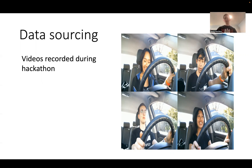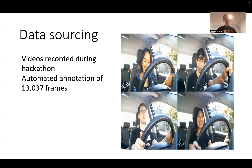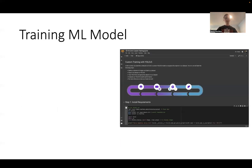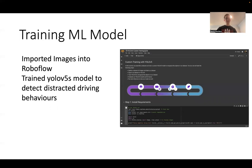We recorded these videos during the hackathon and annotated about 13,000 frames, which we also automated to speed up the process. We split into training, test, and validation sets to ensure good training results, and finally trained the model using Google Colab because of its strong integration with RoboFlow, and we know how to use this software.